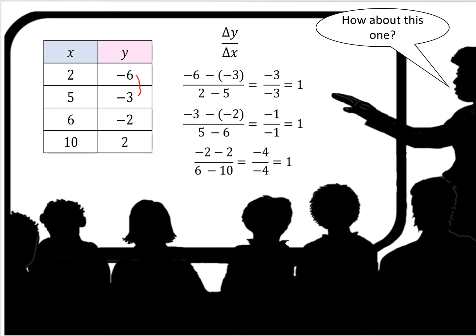So, 6 to 3 over 2 minus 5, it's 1. Minus 3 minus 2, 5 minus 6, slope is 1, or change in rate.